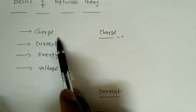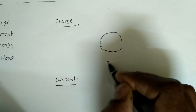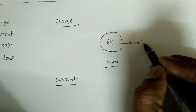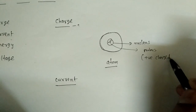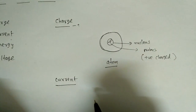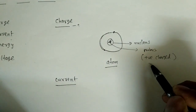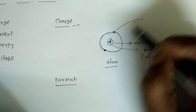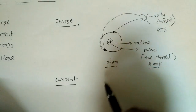The very basics we need to know are charge, current, energy, and voltage. When discussing charge, consider an atom — it has a nucleus with positive charge, and the nucleus contains protons which are positively charged. The equal and opposite charge exists in the valence shell: if the nucleus has two units of positive charge, there should be an equal negative charge.